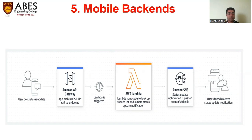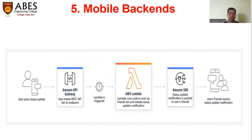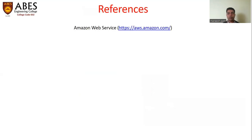The last use case is mobile backends. The user posts a status update, it goes into the API, and then Lambda is triggered. Amazon SNS pushes the status update notification to the user's friends, who then receive the status update notification. We can see with the length and breadth of services that AWS Lambda can be used without managing servers.